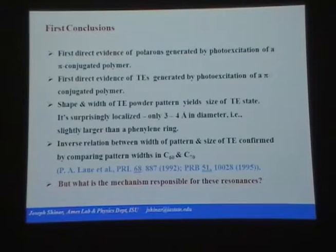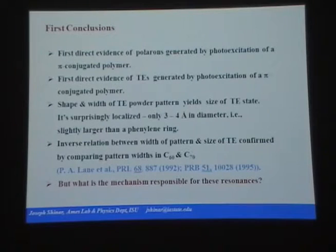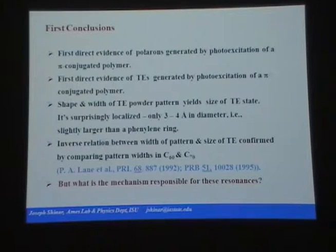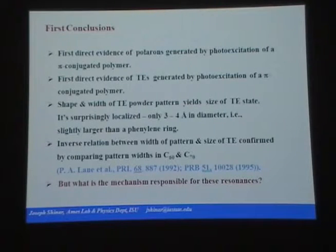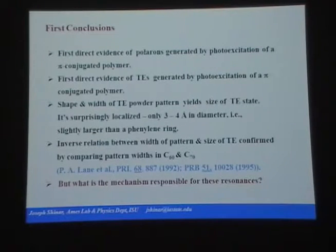First conclusions: for the very first time, we had really direct evidence of polarons generated by photoexcitation of a pi-conjugated polymer. This was not obvious. But if you photoexcite a luminescent pi-conjugated material, the first thing you do is generate singlet excitons — you go from a singlet ground state to a singlet excited state. That's the first and only thing that happens. If some of your singlets dissociate by fission, then you can get polarons, you can get triplets. This was the first direct evidence of that.